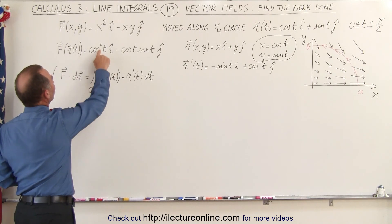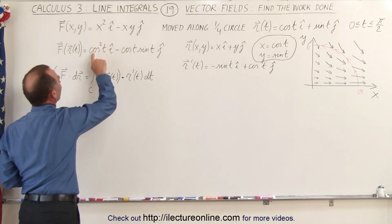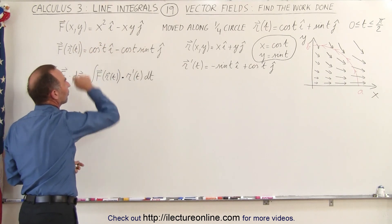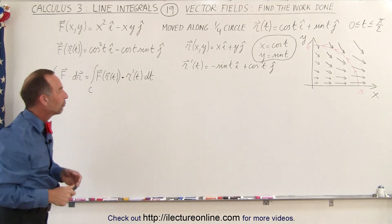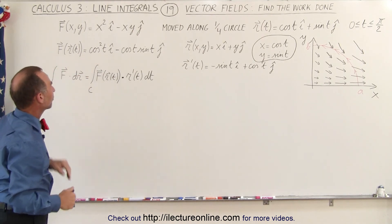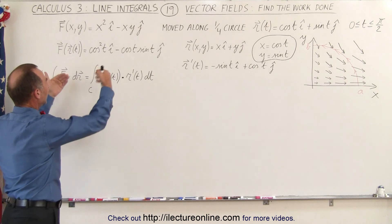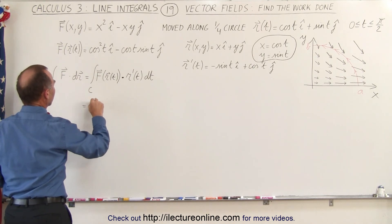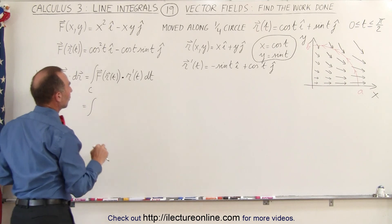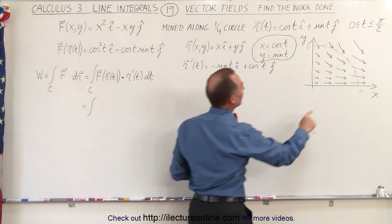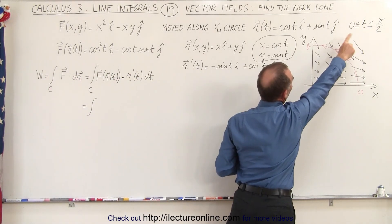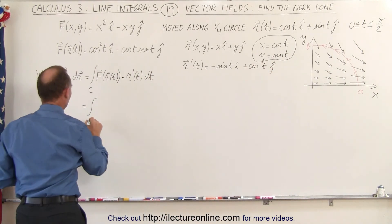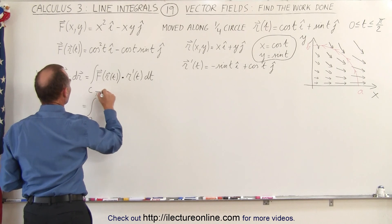If we replace x and y with cosine and sine, the force field can be defined in terms of t. We then plug that into our integral. The limits for the variable t, which is the angle, go from 0 to π/2 because it is simply a quarter circle.